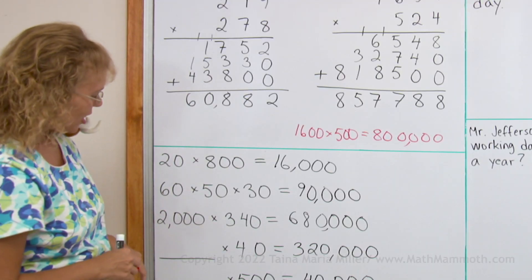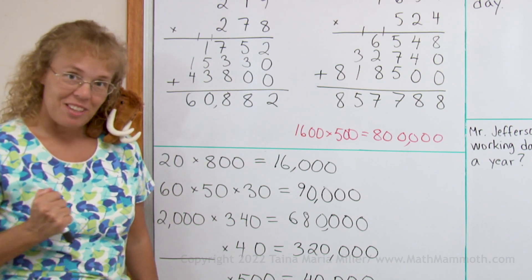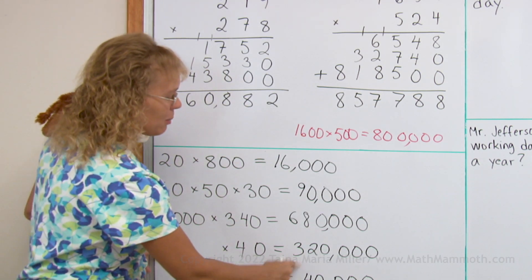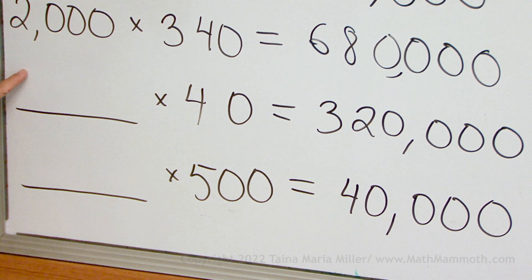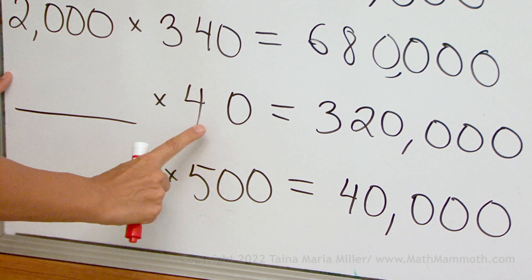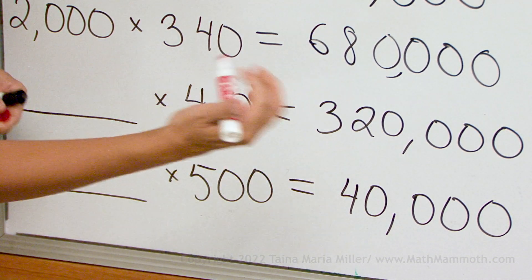Here's a little bit of a challenge. You need to find a missing factor. What number times 40 is this big number, 320,000? You need to think backwards. Think first, what number times 4 equals 32?